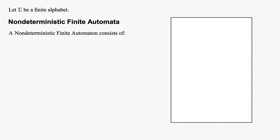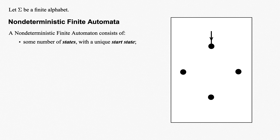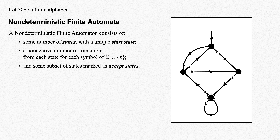Let sigma be some finite alphabet. Recall that a non-deterministic finite automaton, or NFA, consists of a finite number of states, including a unique start state, and a non-negative number of transitions from each state for each symbol of sigma union the empty string, with some subset of states marked as accept states.